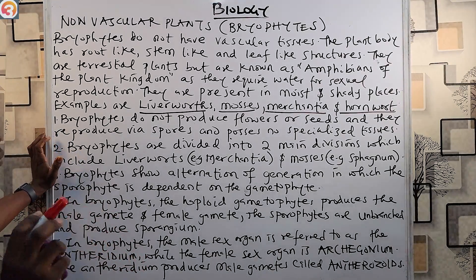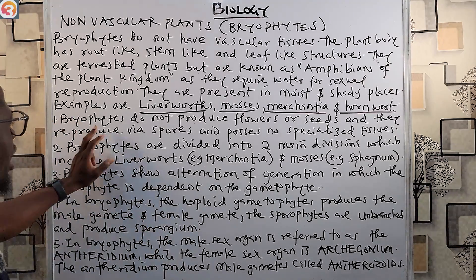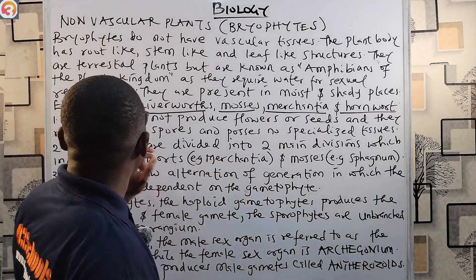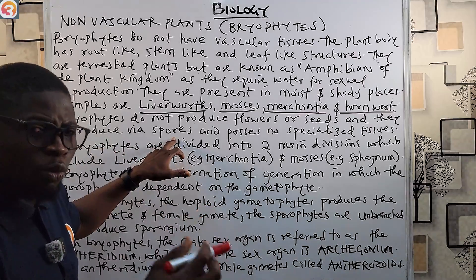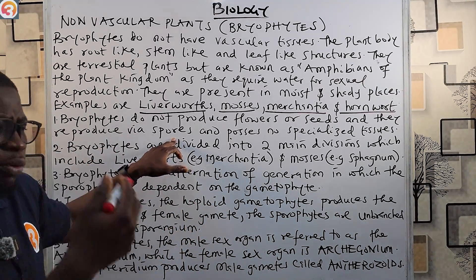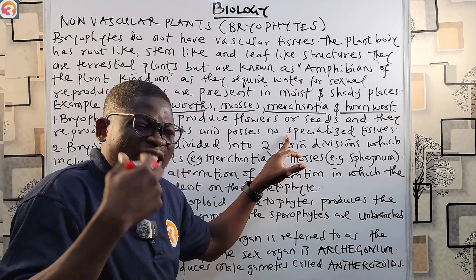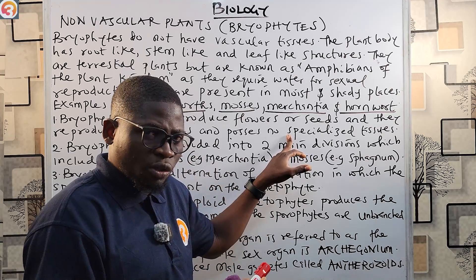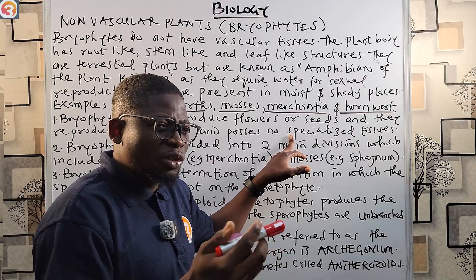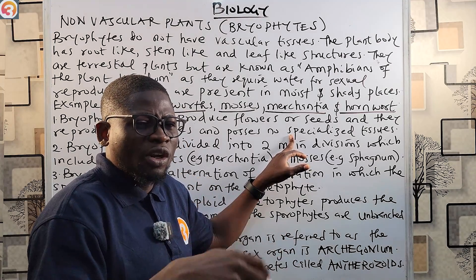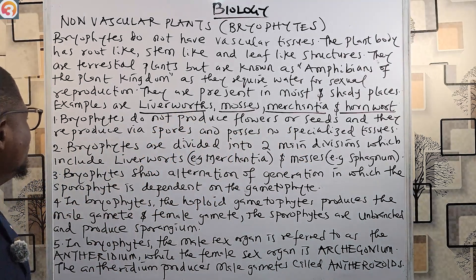Bryophytes do not produce flowers or seeds — they reproduce via spores and possess no specialized tissues. The sporophyte generates spores. They do not have the xylem or phloem for water conduction, food manufacture, or food storage because they are non-vascular.